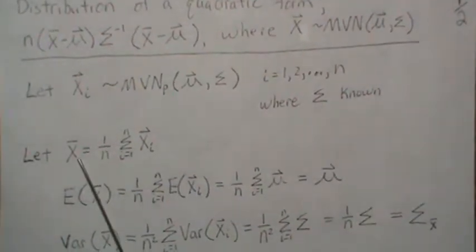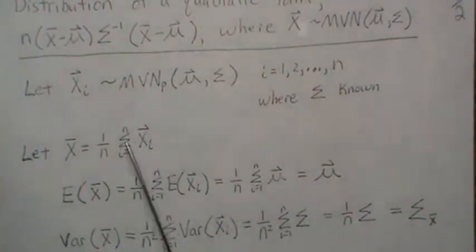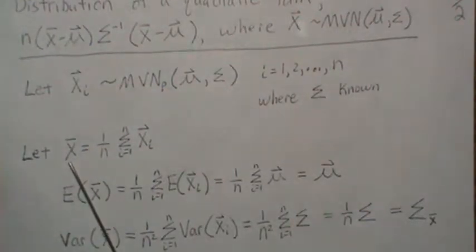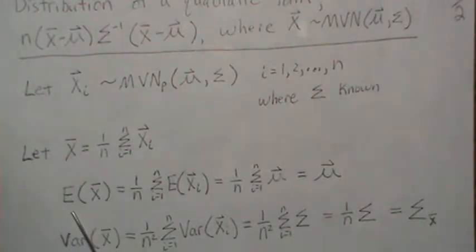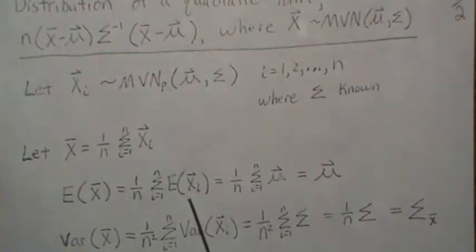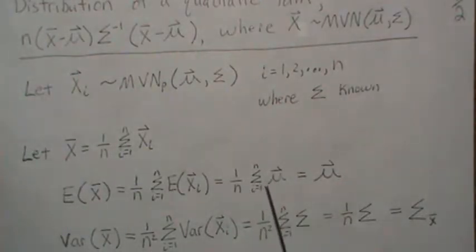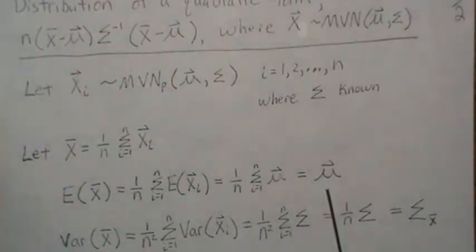Since x bar is a linear combination of normal random variables, it itself is distributed normally. So let's find its mean and variance-covariance matrix. The expected value of x bar: you plug this in, and that expectation goes through the summation sign. The mean of each one of those xi vectors is mu. This is a constant that comes out front, so there are n of those, the n's cancel, and we're left with mu.